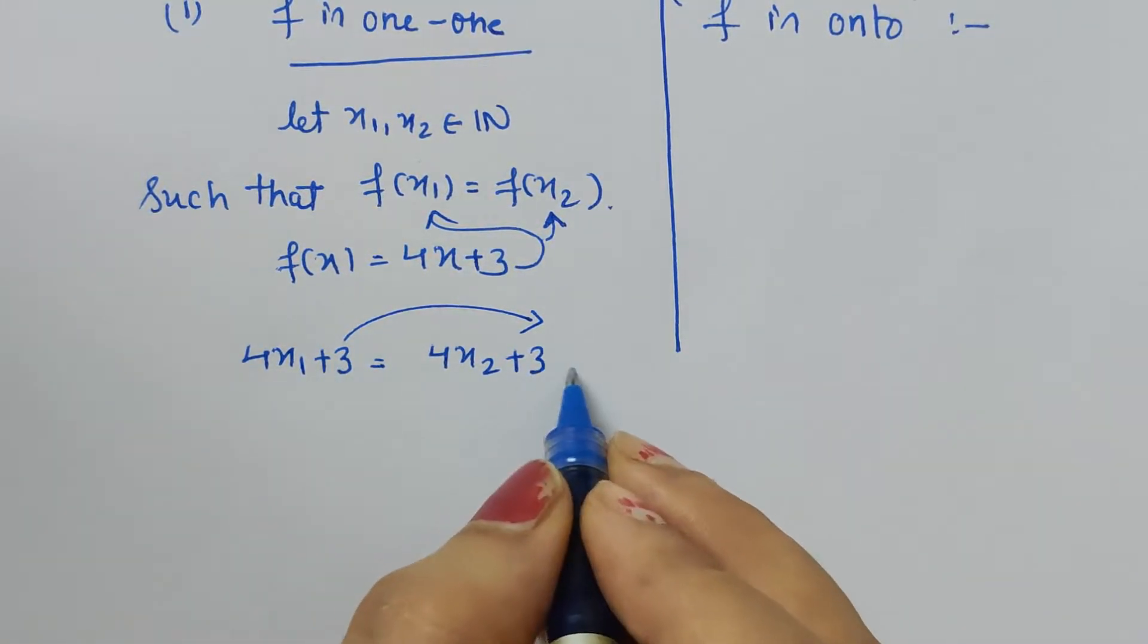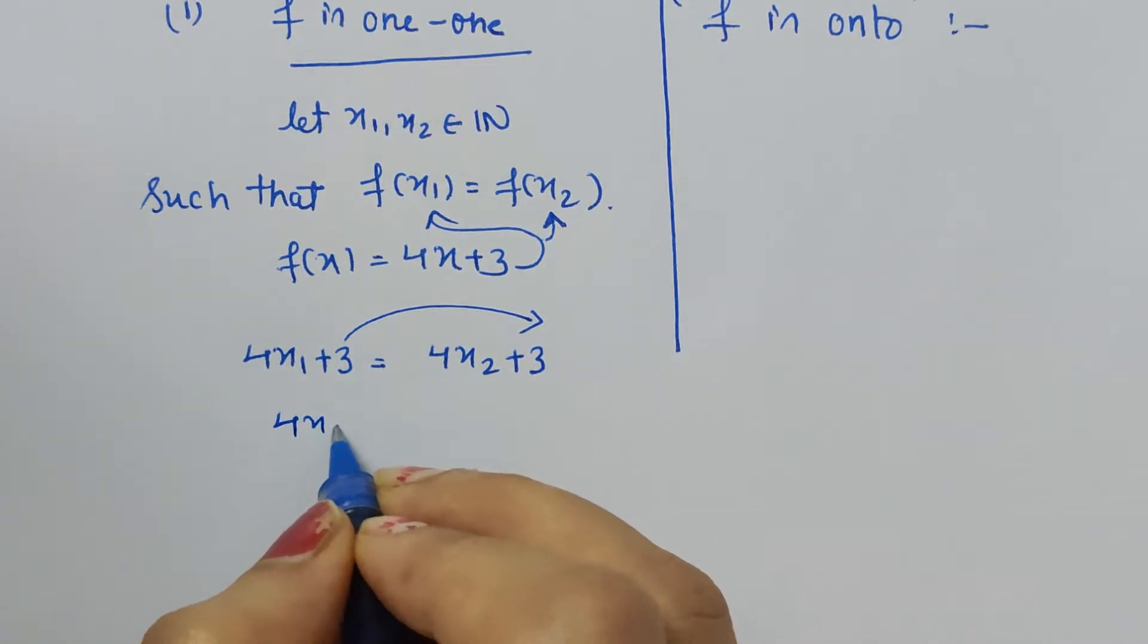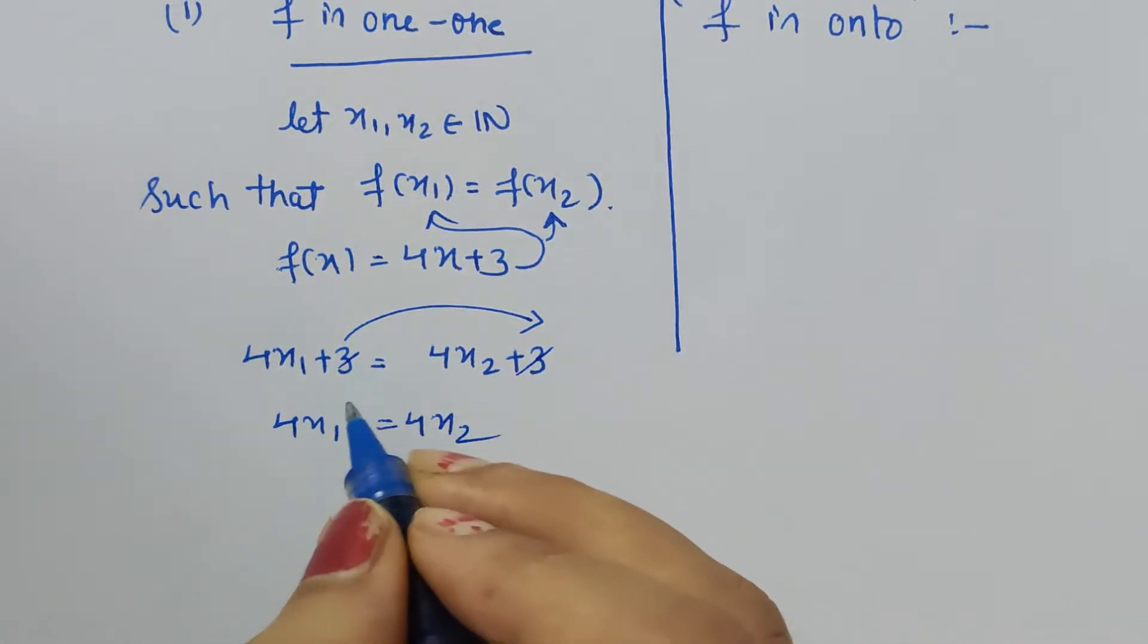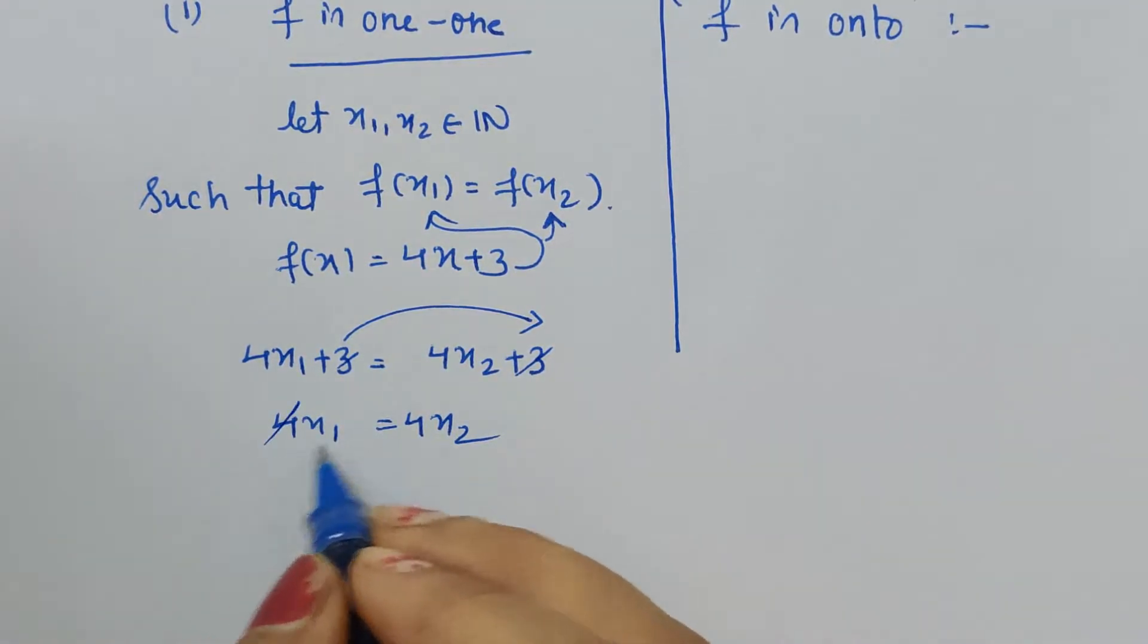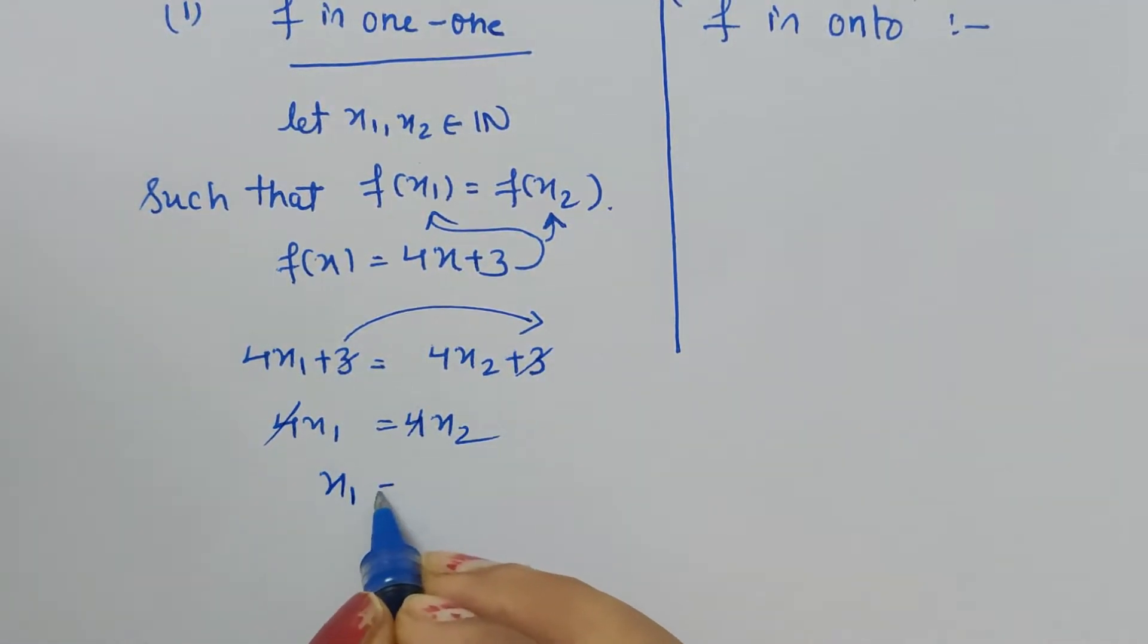And again 4 and 4 get cancelled, and we are left with x₁ is equal to x₂, and this is what our objective is. That is, assuming any two elements of domain such that f(x₁) equals f(x₂), if we are able to prove that x₁ equals x₂, then it is one-one.